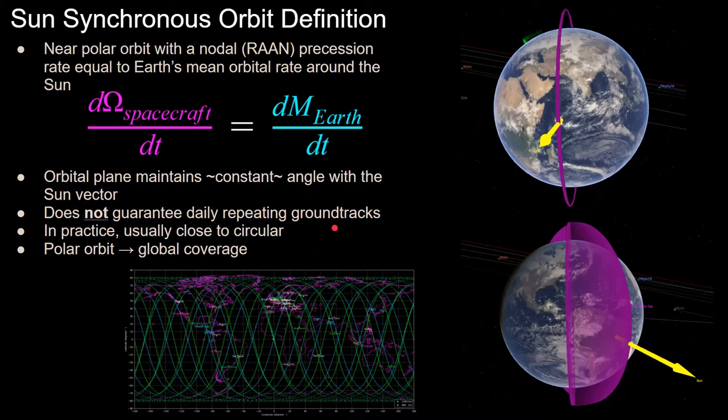And in practice, sun-synchronous orbits tend to be nearly circular, which we will be assuming in this analysis. And again, note that the sun-synchronous orbits are near-polar, so they cover nearly all latitudes and all longitudes, thus providing global coverage as is seen in the ground track plot here.